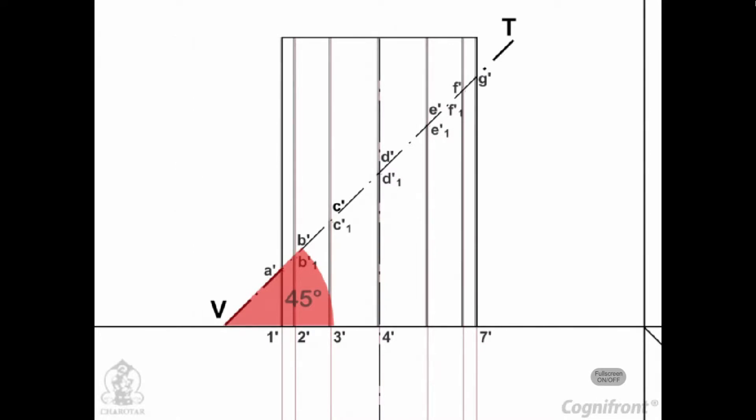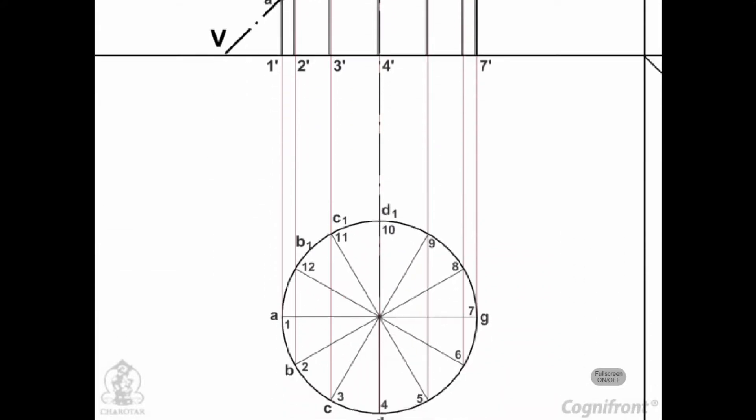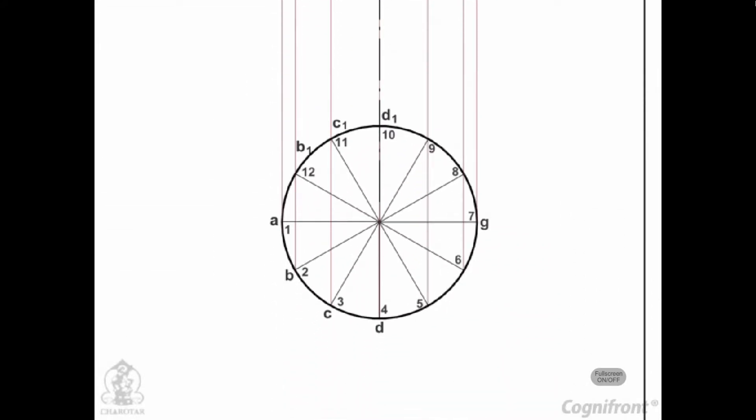Name the points at which these lines are cut by the VT. In the top view, these points lie on the circle, and hence the same circle is the top view of the section.